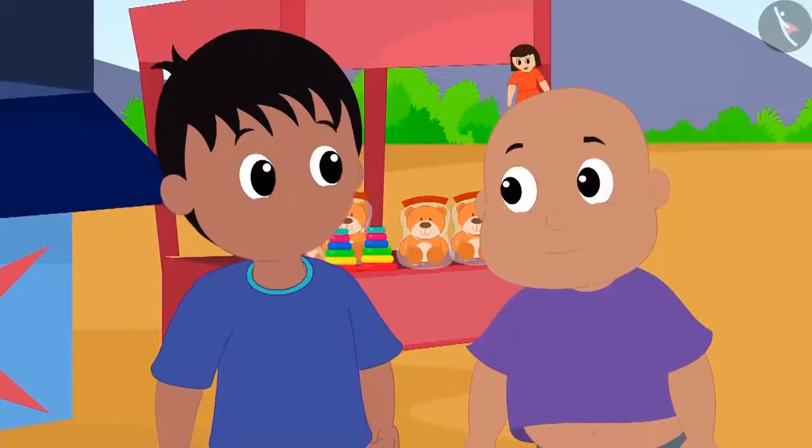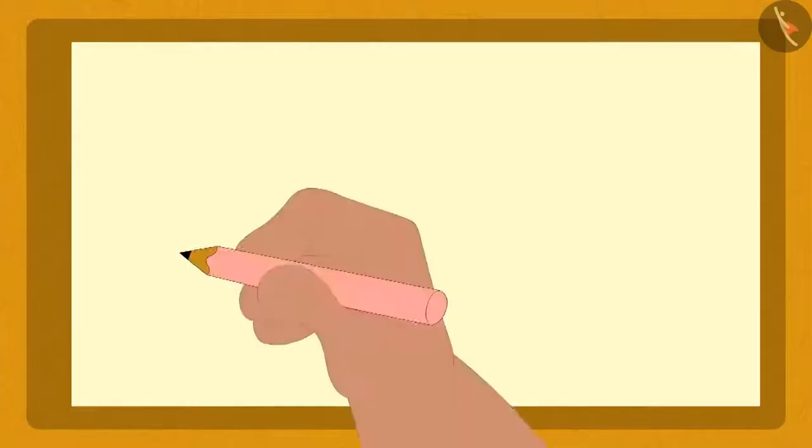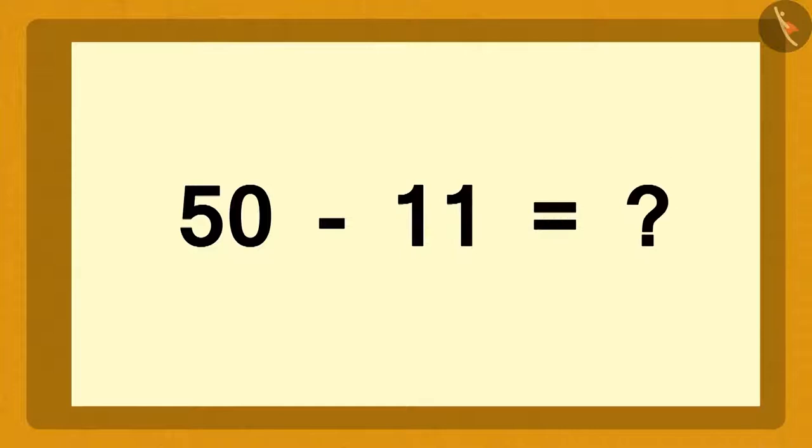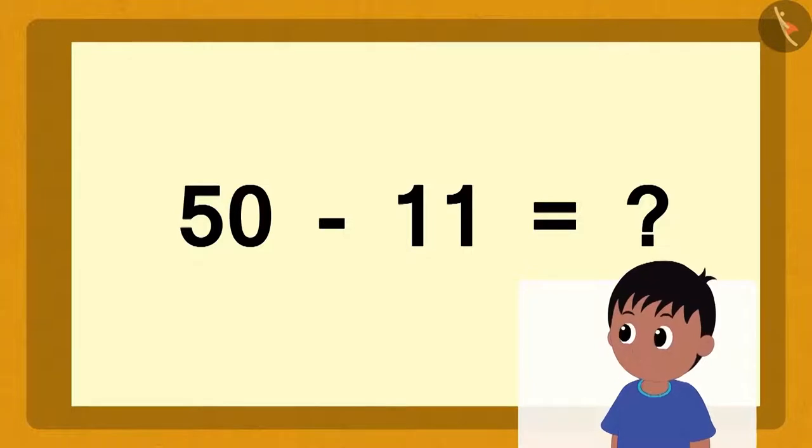Bablu asked Raju how many balloons he had burst. Bablu immediately wrote this question on a piece of paper. But Raju started thinking because he could not understand how he could possibly subtract one ones of 11 from zero ones of 50.